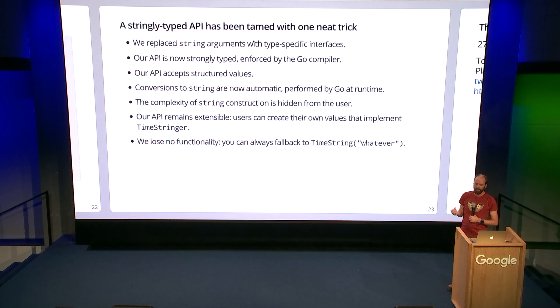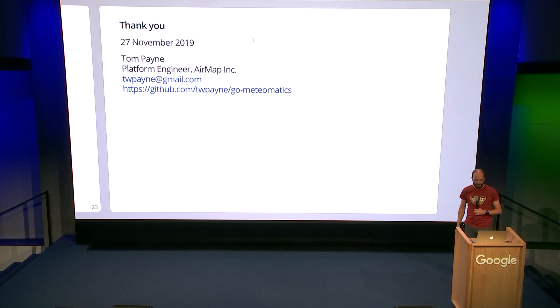And despite this specialization with time stringer, location stringer, parameter stringer interfaces, our API remains expressive. Users can create their own values that implement the same interfaces. And if necessary, you can always fall back to using a time string, using a new time string constructor with whatever you want in it. That's it. That is taming stringly typed APIs with one neat trick.